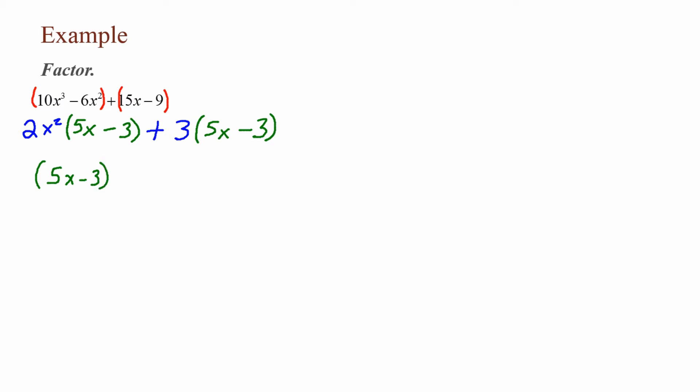So 2x² times (5x minus 3) without the (5x minus 3) is just 2x². Our final answer is (5x minus 3) in one parenthesis and (2x² plus 3) in the other parenthesis.